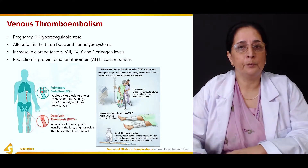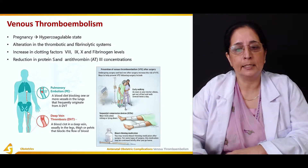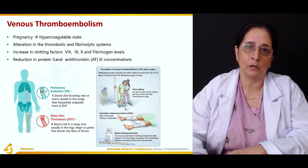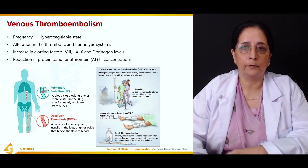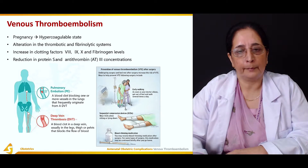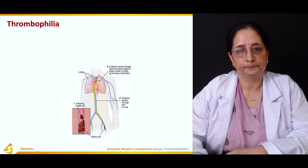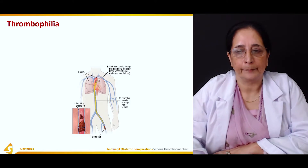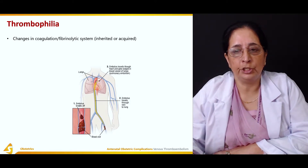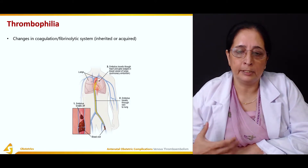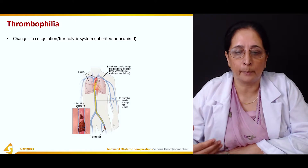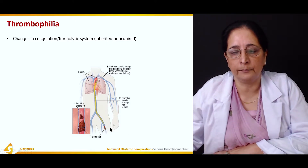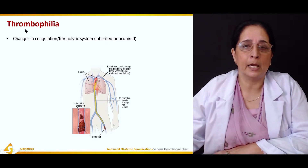Reduction in protein S and antithrombin 3 concentrations is also responsible for thromboembolism. The next condition is thrombophilia — a condition in which there is increased thrombus or blood clot formation.